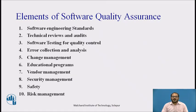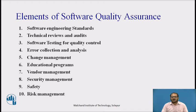There are 10 essential elements of software quality assurance: software engineering standards, technical reviews and audits, software testing for quality control, error collection and analysis, change management, education, vendor management, security management, safety, and risk management.